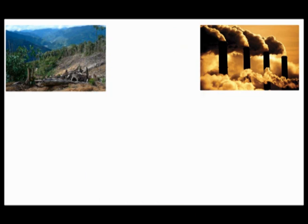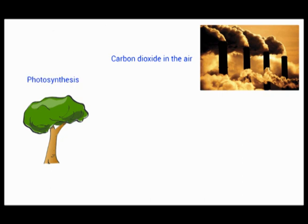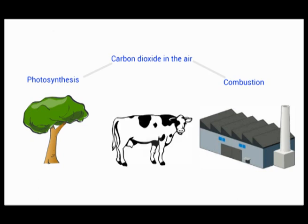Deforestation, where forest land is cut down or burnt to make way for farmland, has a really negative impact because it stops the trees photosynthesizing and taking in carbon dioxide from the atmosphere. The burning of fossil fuels, on the other hand, for energy, mainly releases lots of carbon dioxide into the atmosphere. Other processes such as respiration also release carbon dioxide into the air.